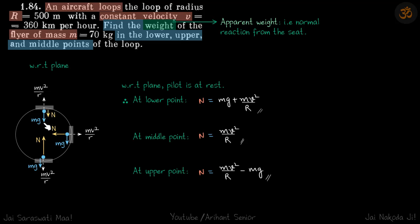So now let's write the force equation for each of these cases. Because the pilot is at rest with respect to the plane, the forces must be balanced. So at lower point, N must be equal to mg plus mv square by r. At middle, N must be equal to mv square by r. And on the top, N plus mg must be equal to mv square by r. So that will give the value of our apparent weight.